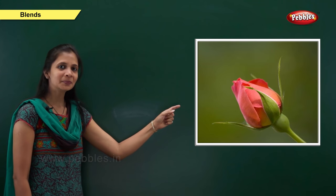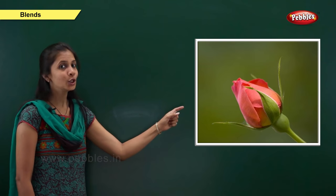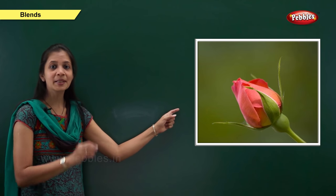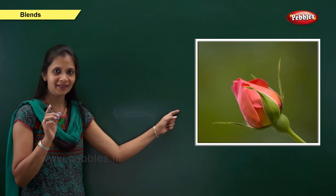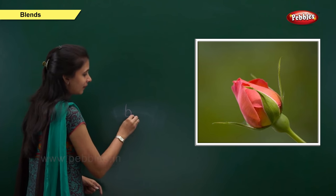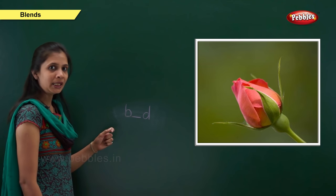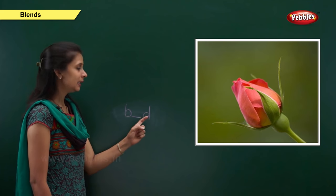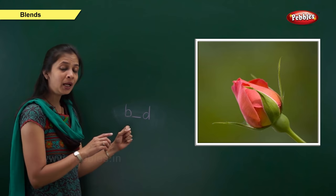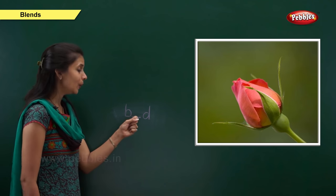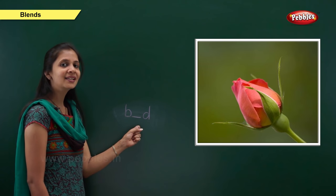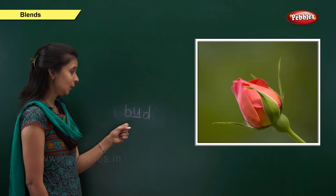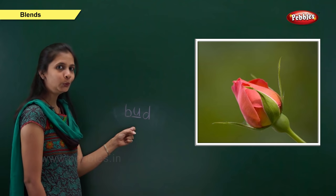Next one. Which picture is this? Yes, it is bud. What is the sound of this word? It is b, a, d. When the beginning sound is 'b', the letter is b. The ending sound is 'd', the letter is d. What about the middle sound? The vowel is u. U says 'a'. So: b, a, d — bud. B, u, d — bud.